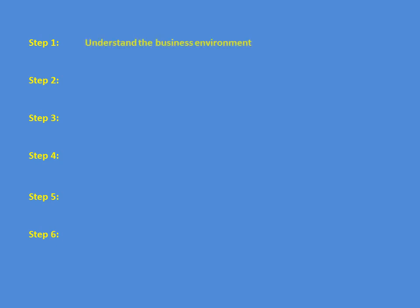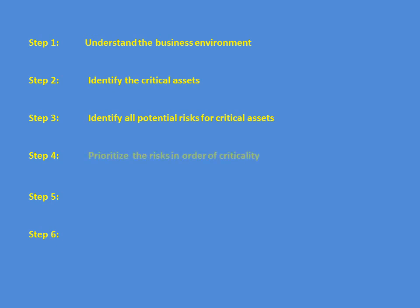There are six steps for the risk assessment activity. The first step is to understand the business environment — it is the basic requirement of any risk assessment activity. The second step is to identify the critical assets that support that particular business. The third step is to identify all potential risks for those critical assets.